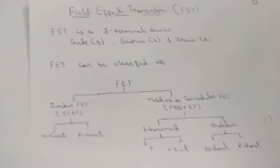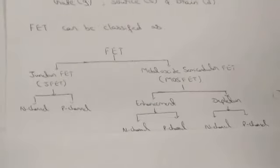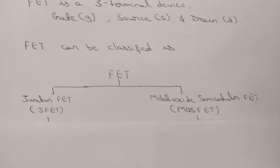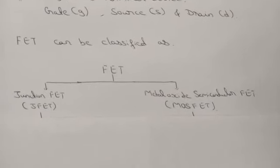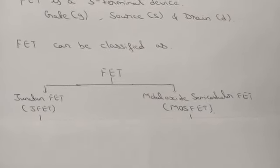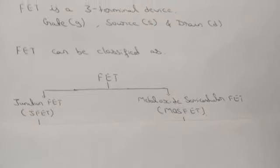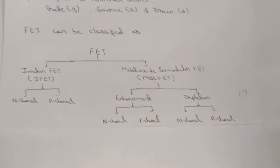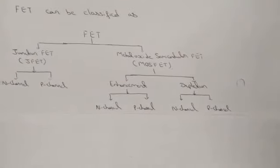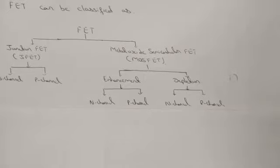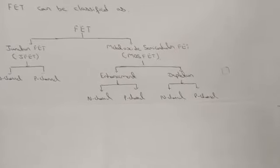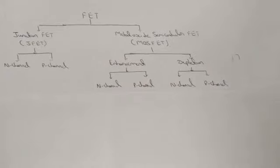FET can be classified into two parts: JFET and MOSFET. J represents junction FET and MOS represents metal oxide semiconductor FET. JFET can be divided into N-channel and P-channel. Similarly, MOSFET has enhancement mode and depletion mode, and enhancement mode is further divided into N-channel and P-channel.